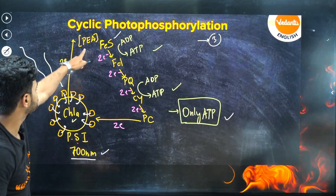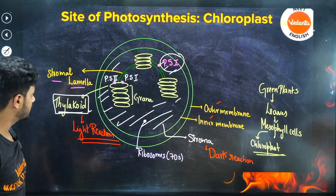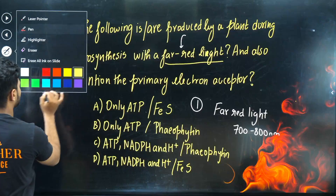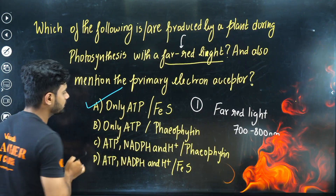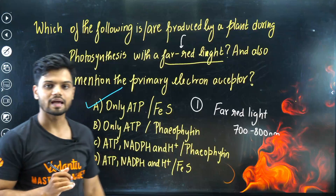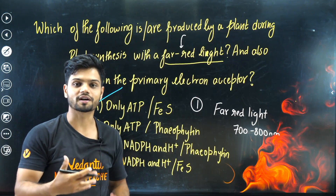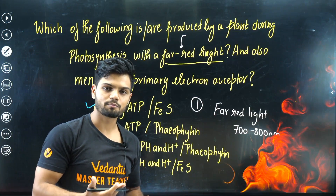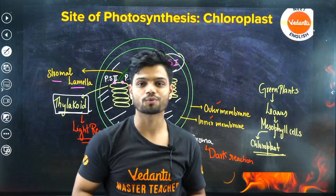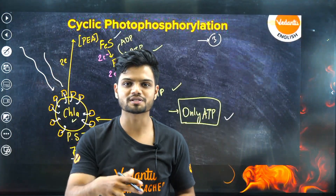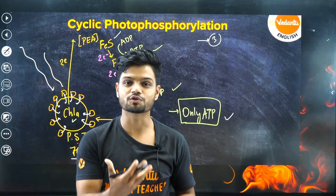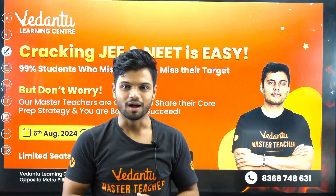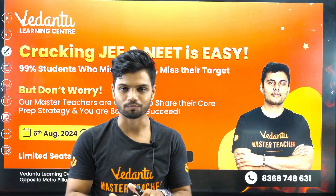So the answer is: only ATP and FES — only ATP as the product and FES as the primary electron acceptor. This is a challenging question that requires you to connect multiple concepts. Let me know in the comment section if you were able to solve it, and if you want more questions like this that make you think and analyze more.